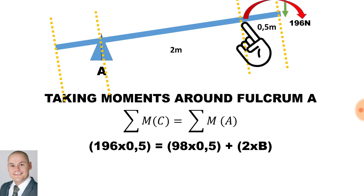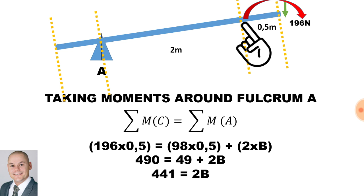For the clockwise moment, we have a force of 196 newtons pushing down onto the beam, multiplied by the distance of 0.5 meters. If we mathematically simplify this, 490 is equal to 49 plus 2B. To work out the unknown value B, which is the upward force: 490 subtract 49, divided by 2, gives us an upward force of 220.5 newtons.